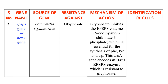The mechanism of action: glyphosate inhibits the enzyme enolpyruvylshikimate phosphate, which is the EPSPS enzyme. This enzyme is essential for the synthesis of aromatic amino acids — phenylalanine, tyrosine, and tryptophan. The ROA gene or EPSPS gene encodes the EPSPS enzyme.